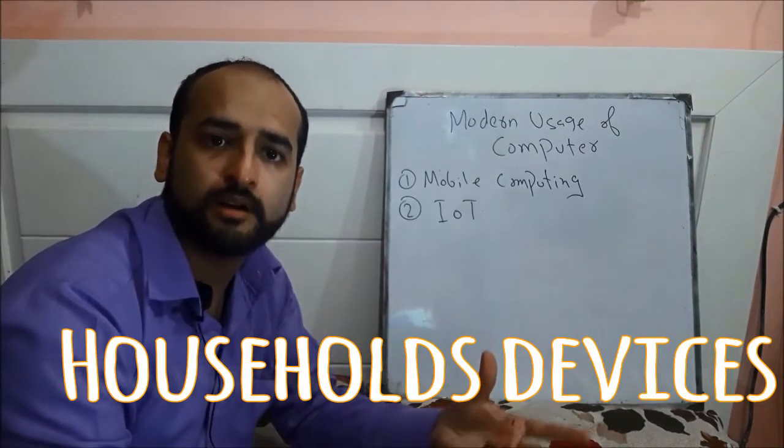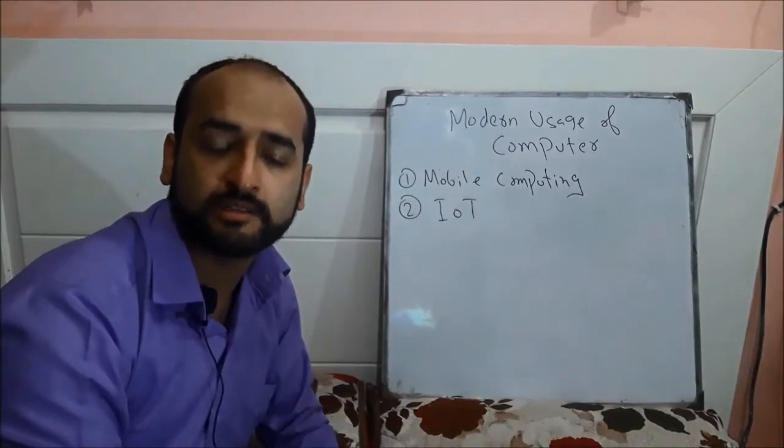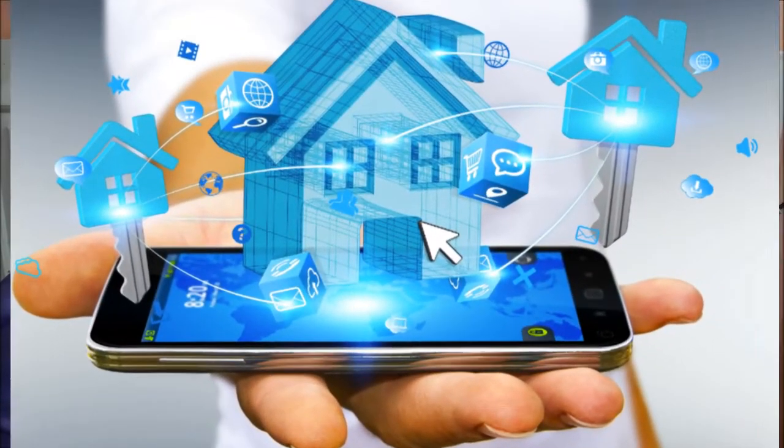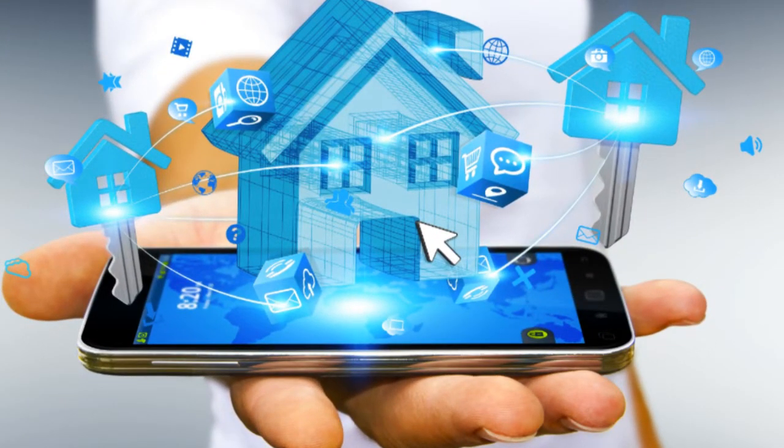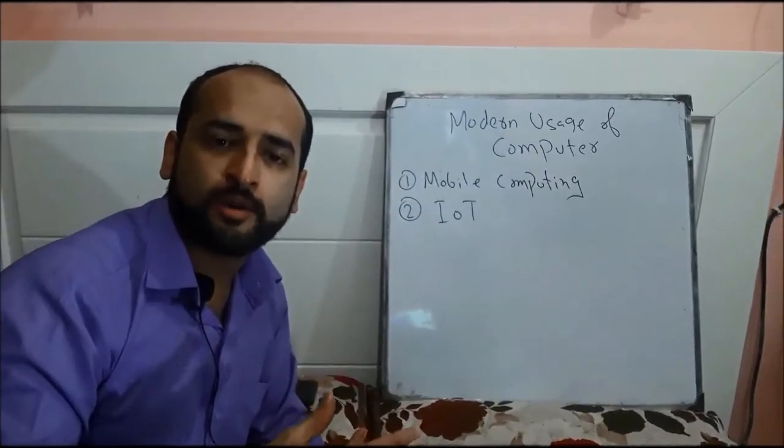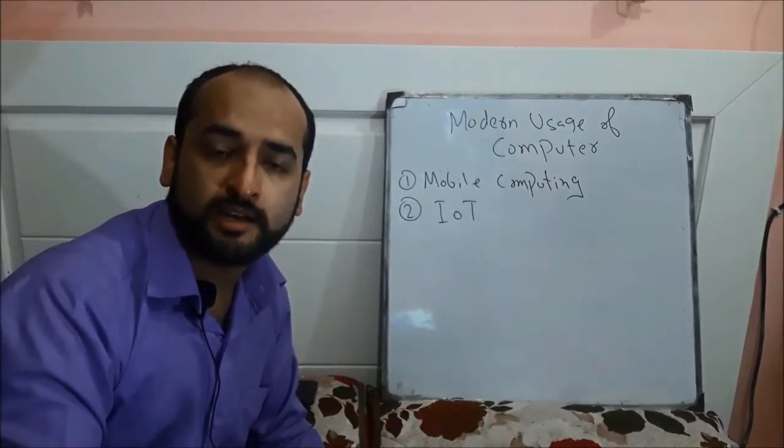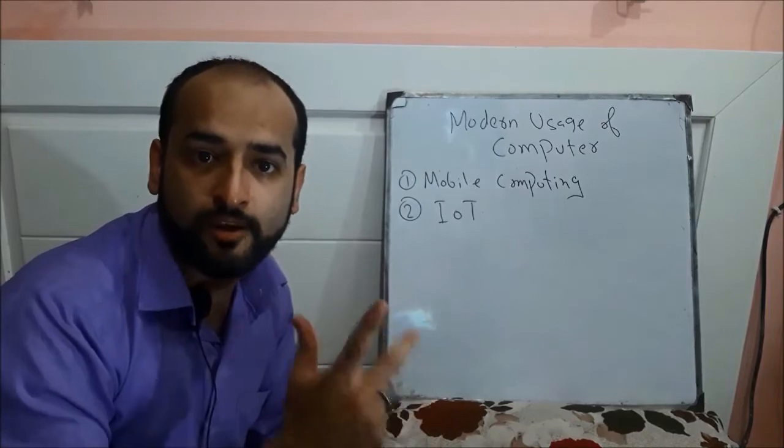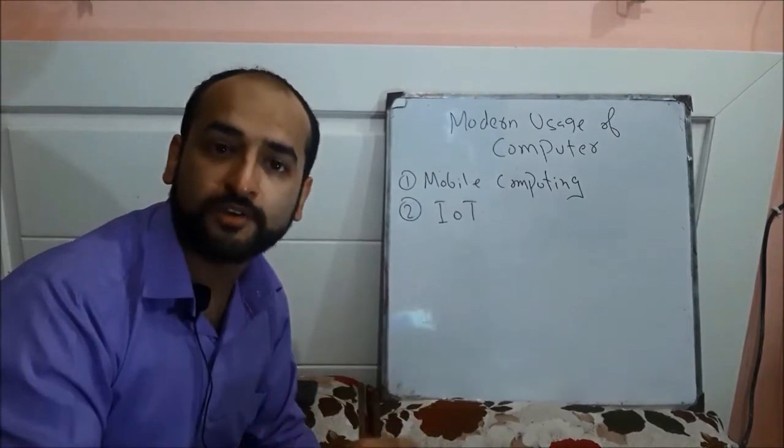Air conditioners, fans, doorways - these are all things. If we control these things through the Internet, then this phenomenon is known as the Internet of Things. For example, if you go to the office and you remember that you didn't turn off the fan or light,